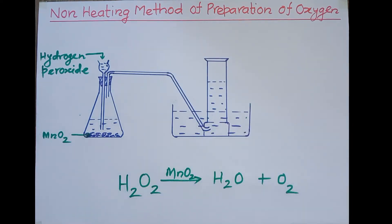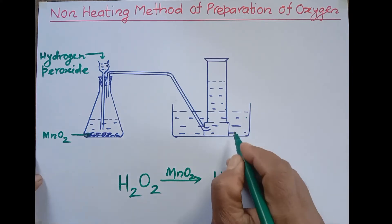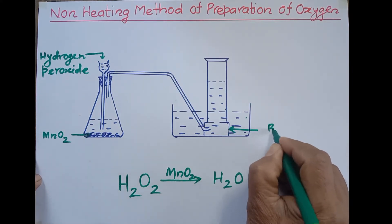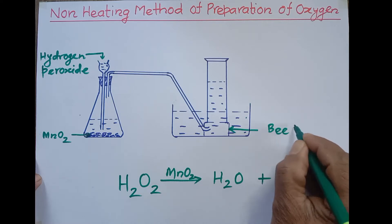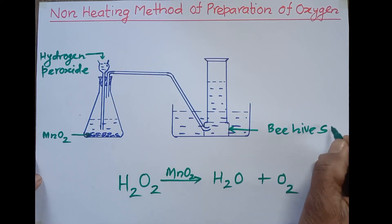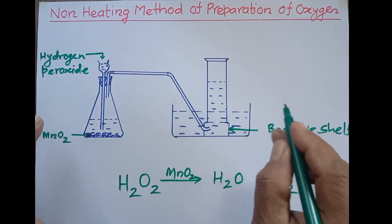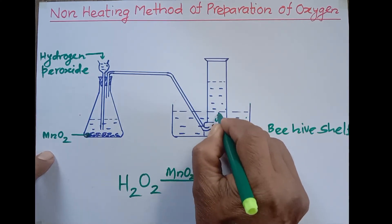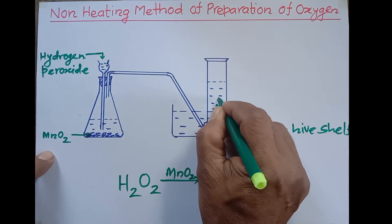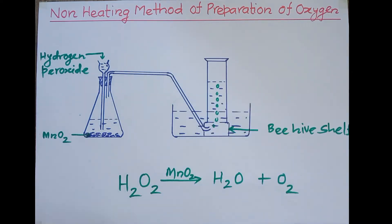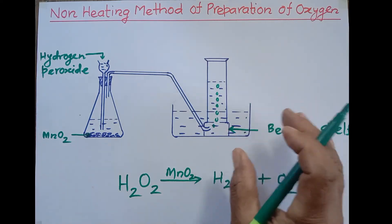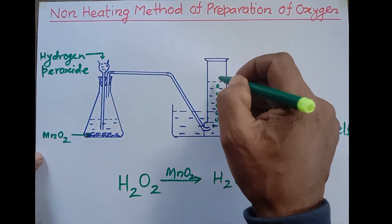The oxygen gas produced comes up and goes through this delivery tube. When it reaches this beehive shelf, oxygen is negligibly soluble in water and is lighter than water.